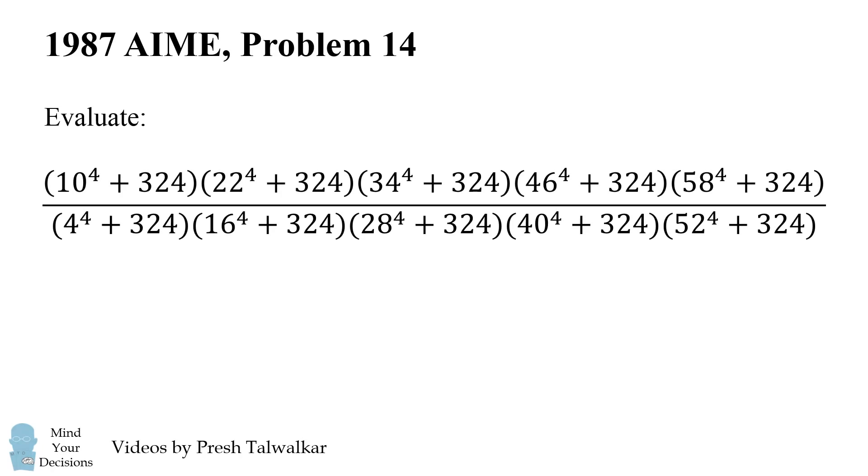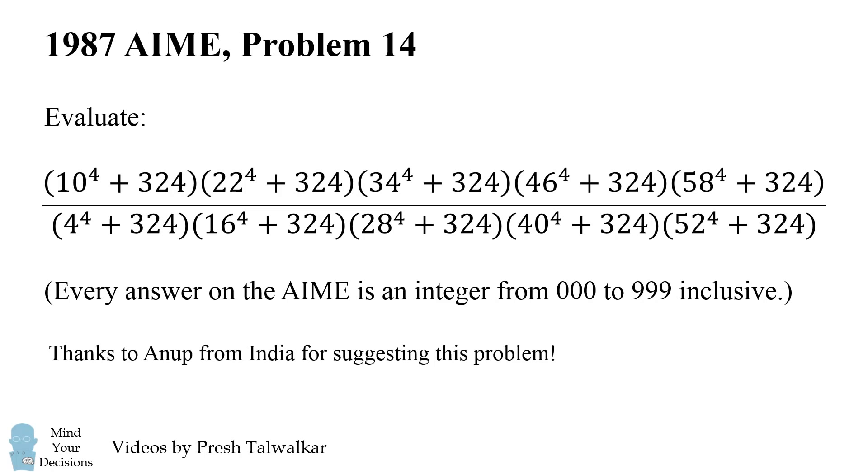In this video, I'm going to present problem 14 from the 1987 test. The problem is to evaluate the following fraction. Every answer on the AIME is an integer from 0 to 999 inclusive. I thank Anoop from India for suggesting this problem.